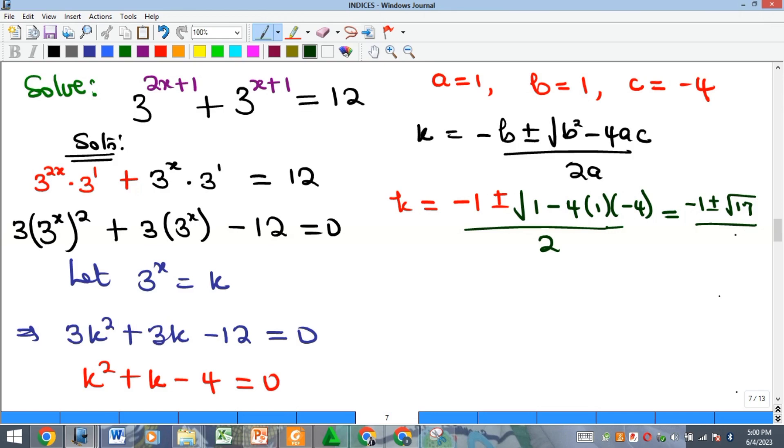So we'll have 1 plus 16, which is 17, so we'll have square root of 17 over 2. The square root of 17 is approximately 4.1, so we'll have minus 1 plus or minus 4.1 all over 2.